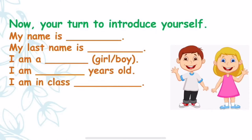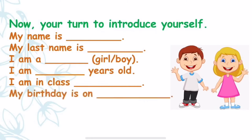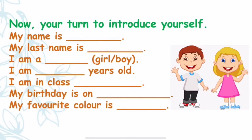My birthday is on — we have to tell our date and the month. Like Tina told her birthday was on 10th March, you have to tell your birthday here. My favorite color is — you have to tell what your favorite color is. This is how we introduce ourselves, or you can say these are a few lines about myself.